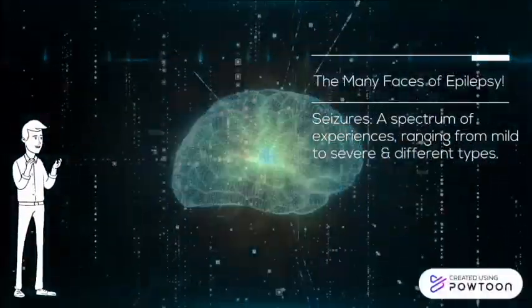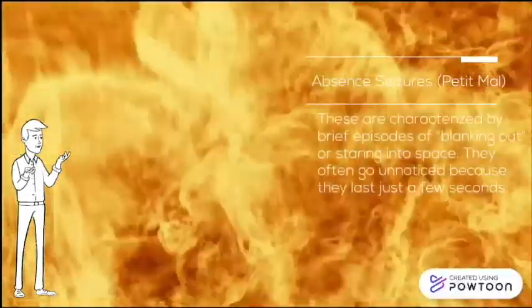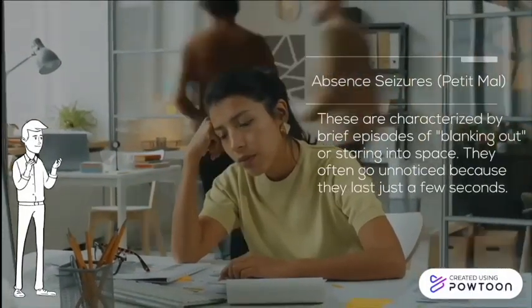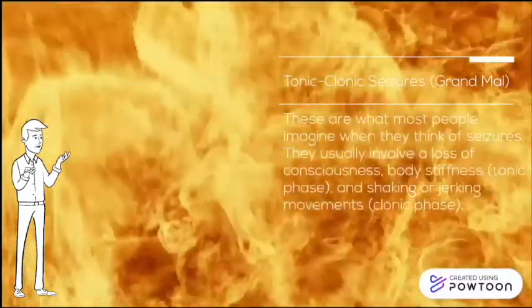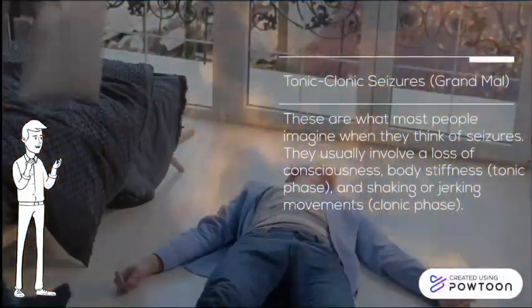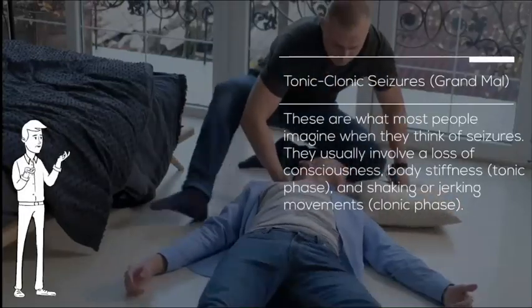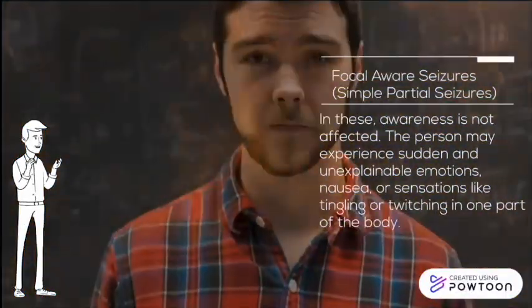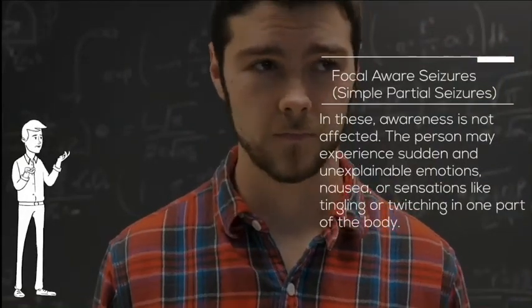This neural disruption has many phases. Let's explore these phases of epilepsy as seizures. First, absent seizures — silent hiccups in the brain's melody causing moments of staring blankly into space, often unnoticed. Tonic-clonic seizures are a crescendo of neural activity causing stiffness, shaking, and loss of consciousness. Simple partial seizures can cause sudden, unexplainable emotions or physical sensations like twitching.